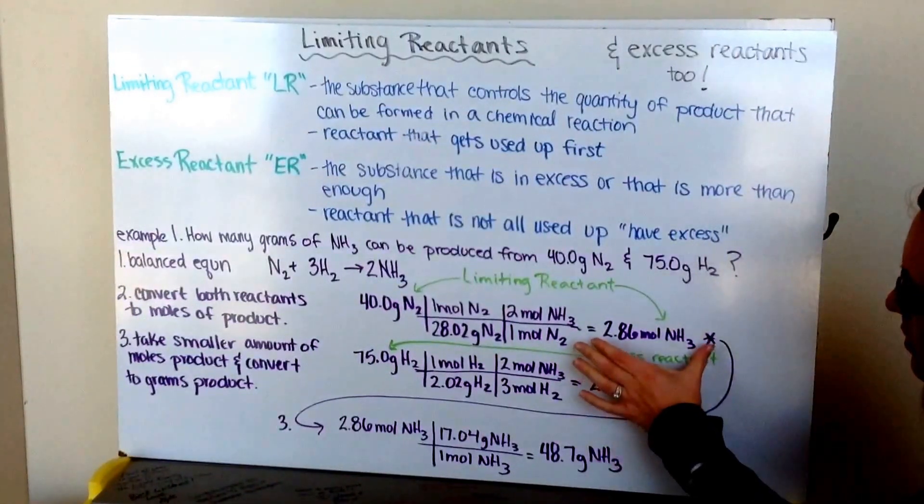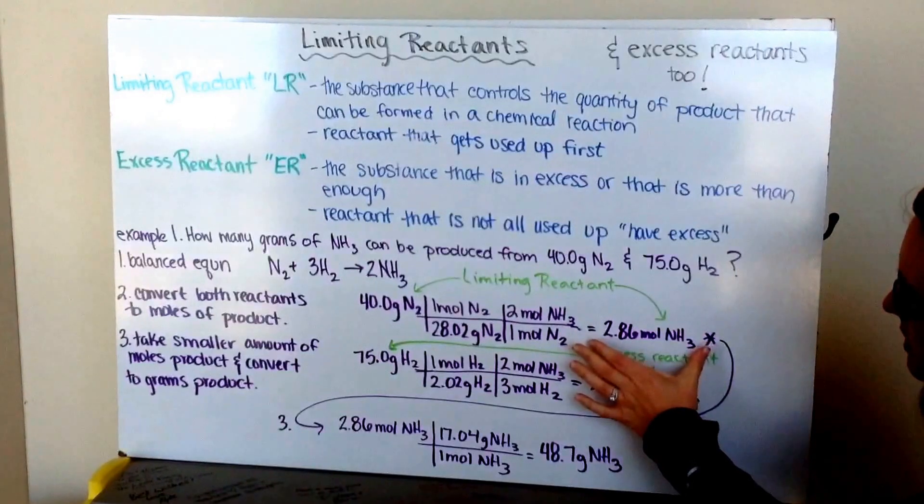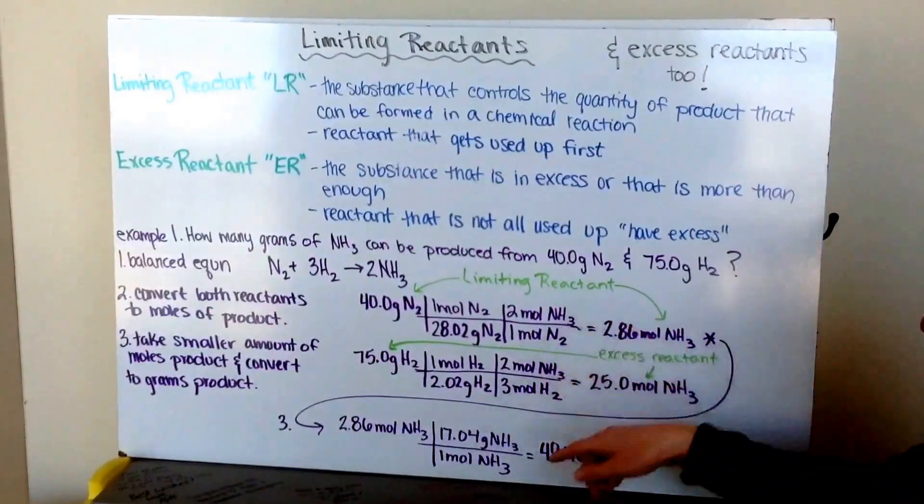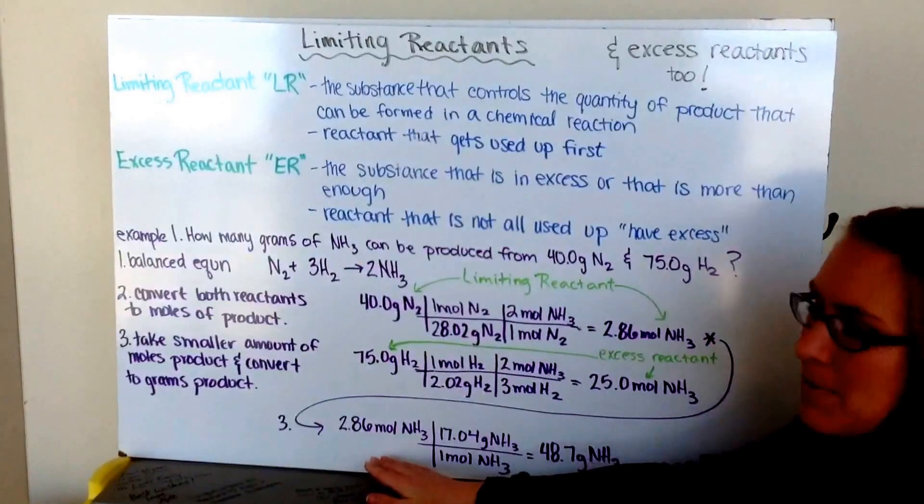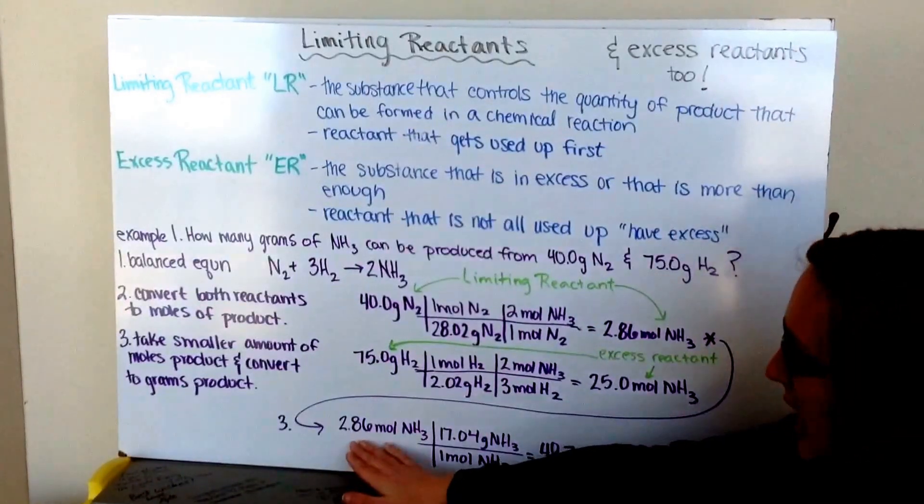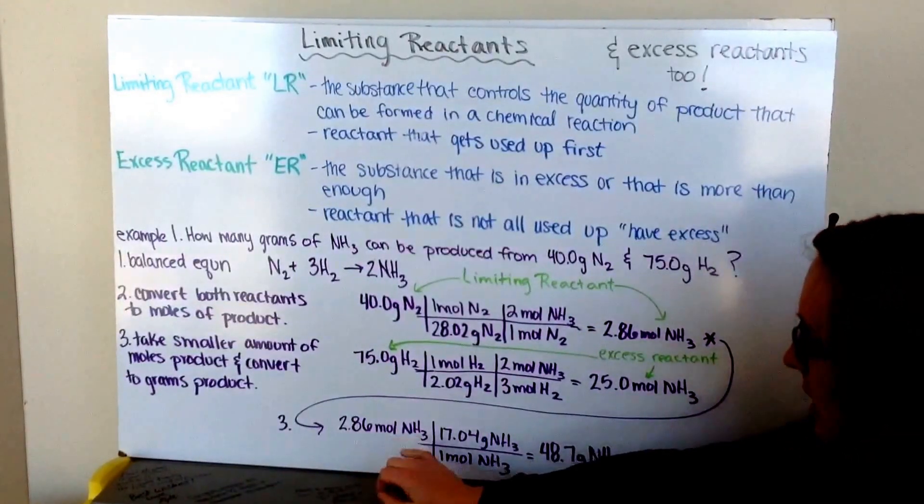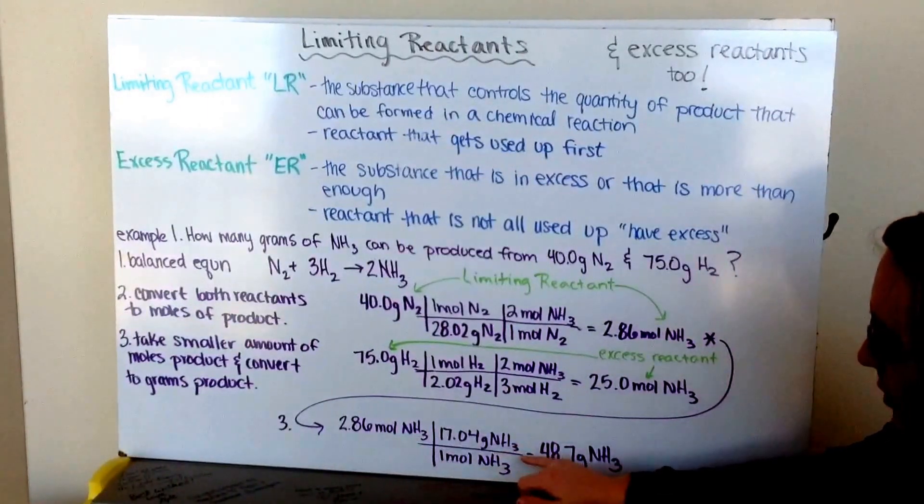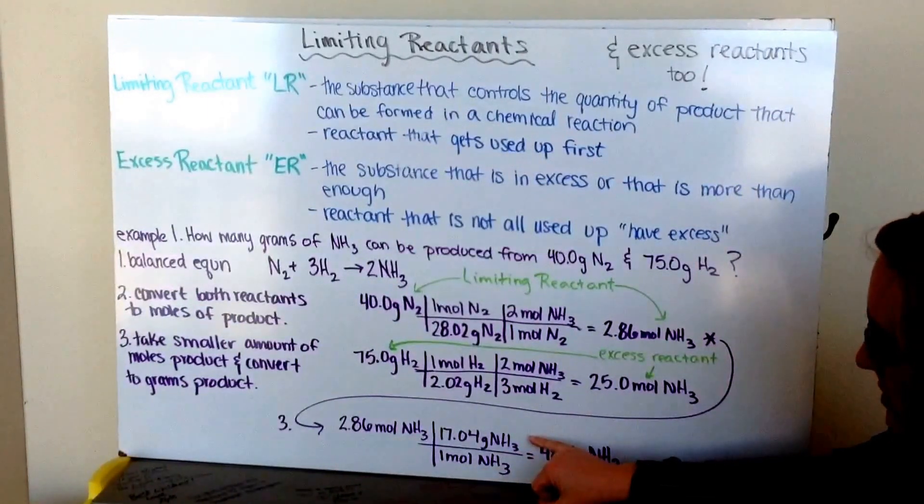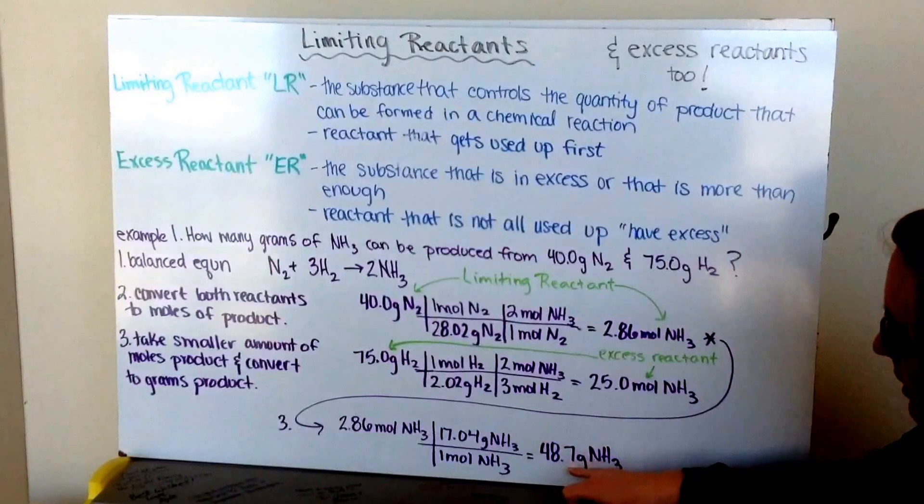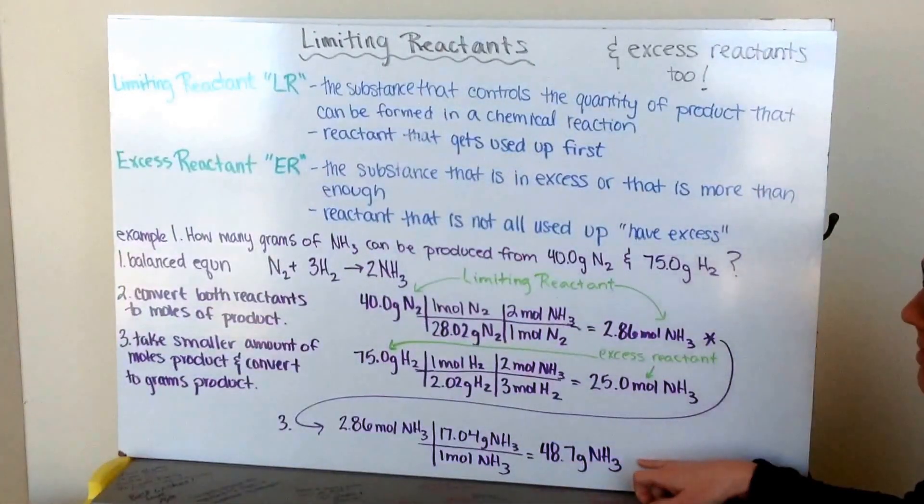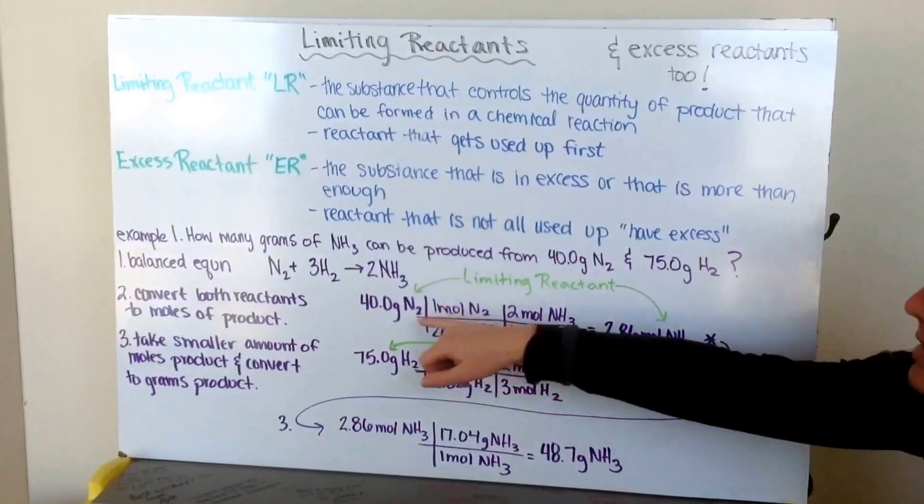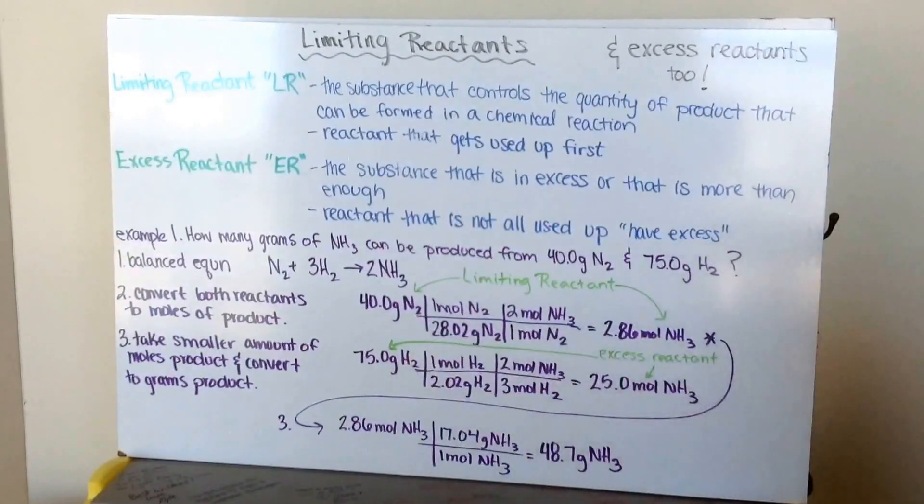So, then I take my amount that I can only make, my moles of ammonia, my 2.86, and then I'm going to convert that to grams to figure out, well, how many grams of ammonia is that? So, I take my 2.86 moles of ammonia, and I use this molar mass of 1 mole of 17.04 grams of ammonia, and I get 48.7 grams of ammonia as my actual amount that can be made based on my limiting reactant of 40 grams of nitrogen gas.